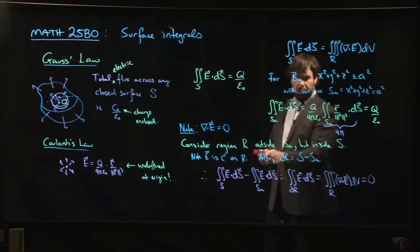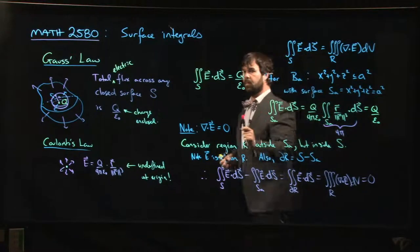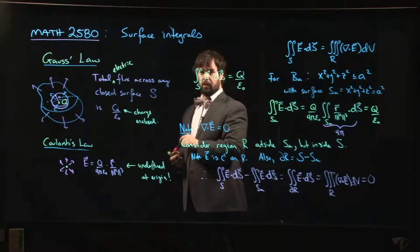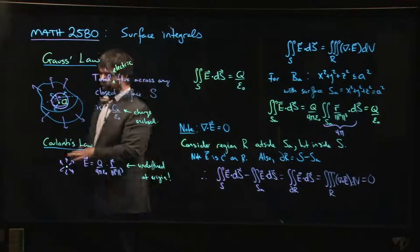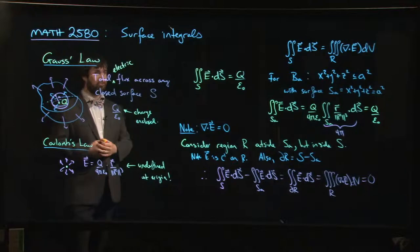We know that this one is equal to q over epsilon naught, so now we know that that one's q over epsilon naught as well. So that gives you Gauss's law for a point charge.